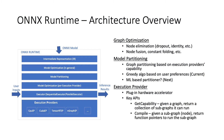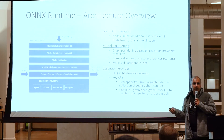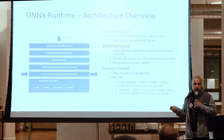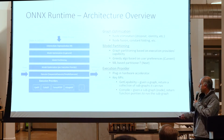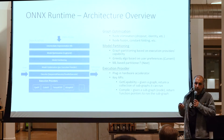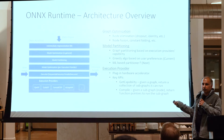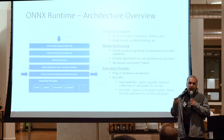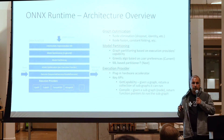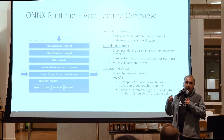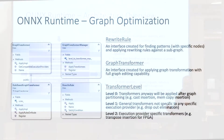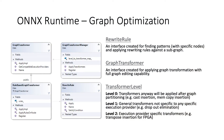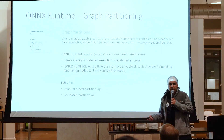The execution provider is the interface to every hardware accelerator. More and more hardware accelerators are joining and writing execution providers so that Onyx graphs can run on their devices. We expose an API for them — the get capability API, which says 'given a graph, give me a subgraph I can run on.' There is also the compile phase of the API, where the provider says it can run a bunch of nodes together as a subgraph and provides its own implementations of the operators.